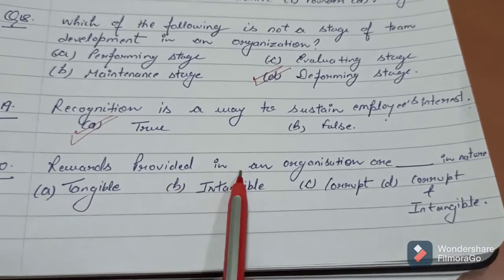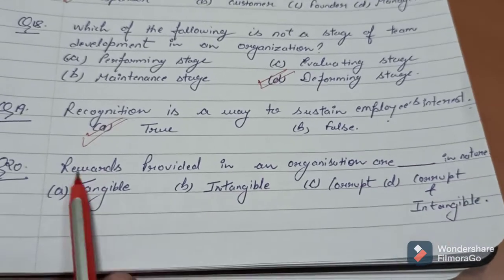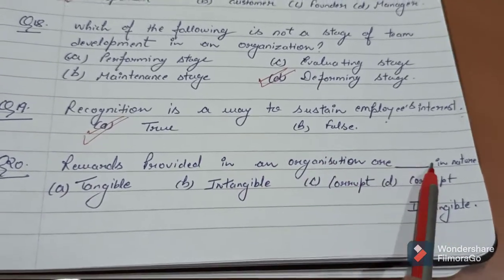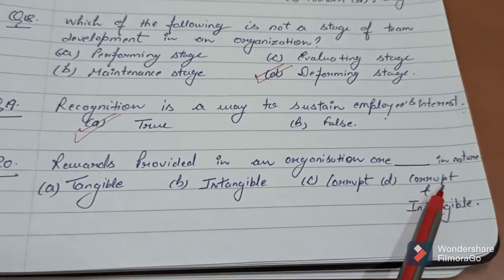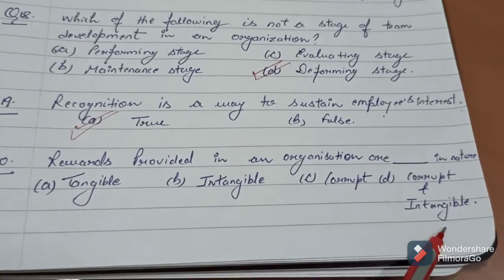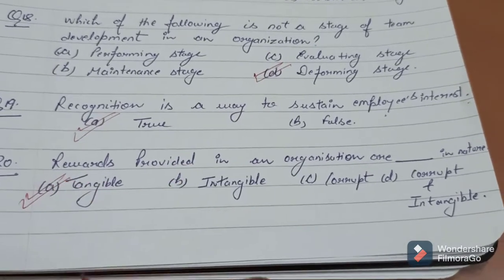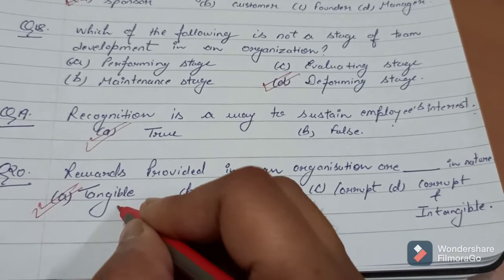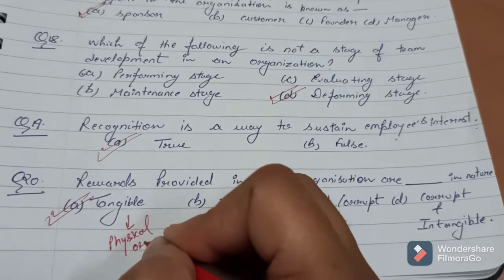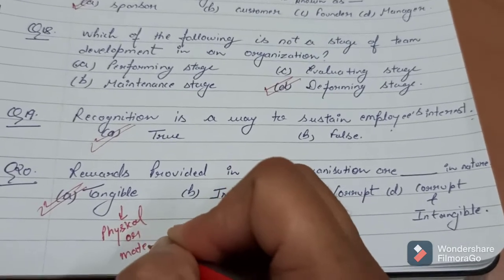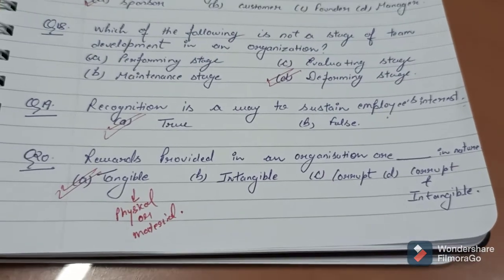Question number 20: Rewards provided in an organization are dash in nature. Jo rewards organization mein provide hota hai, wo kis tarah ke hota hai? Options: tangible, intangible, corrupt, or corrupt and intangible. This is a very important question. The answer is A — that is tangible. Tangible means it is physical in nature; you can also say that it is material. Therefore, the answer is tangible.